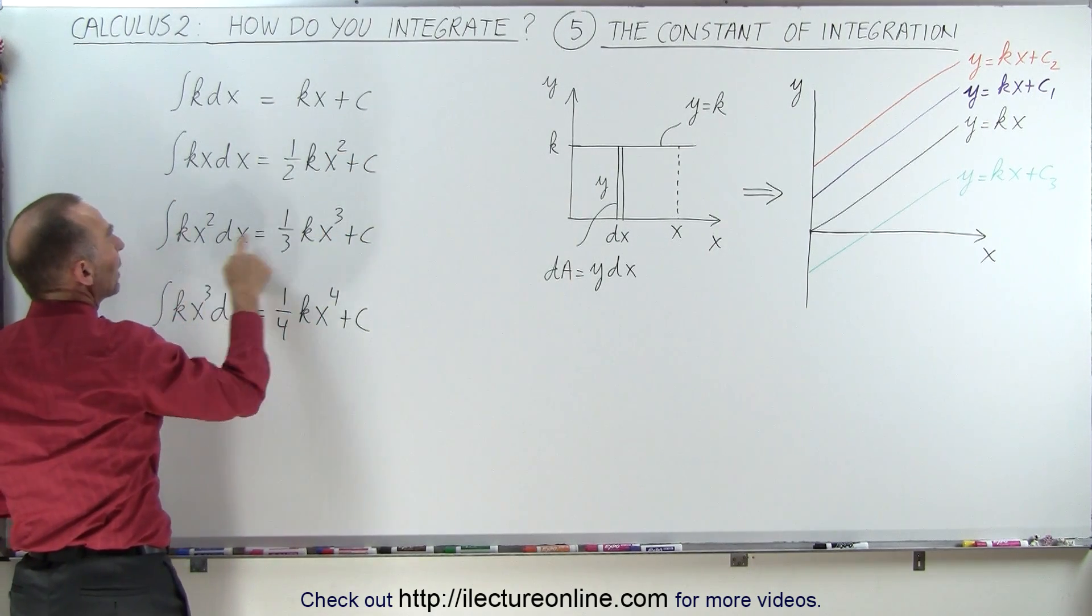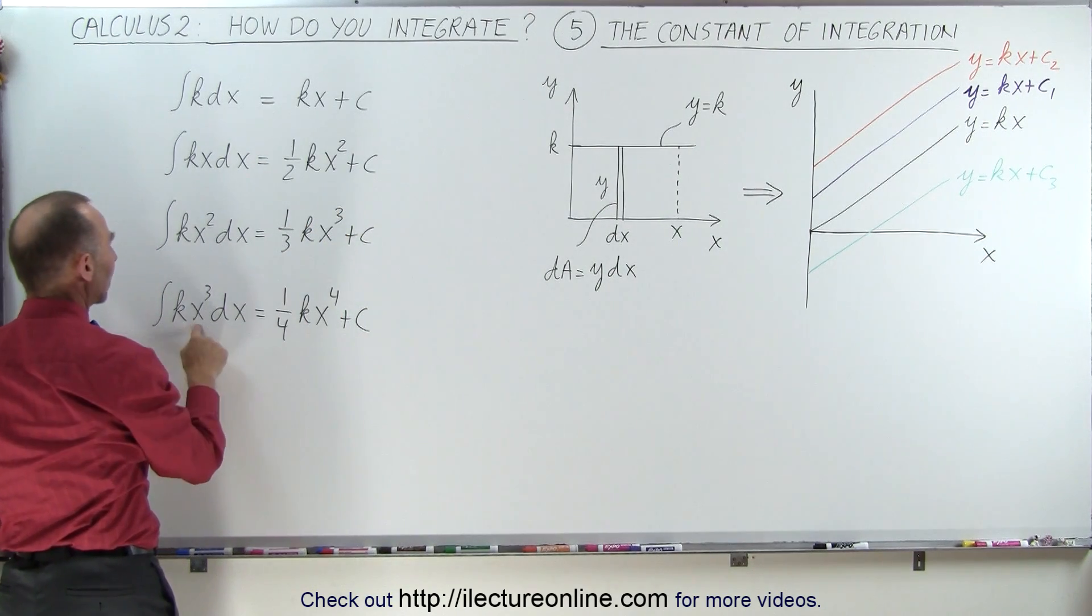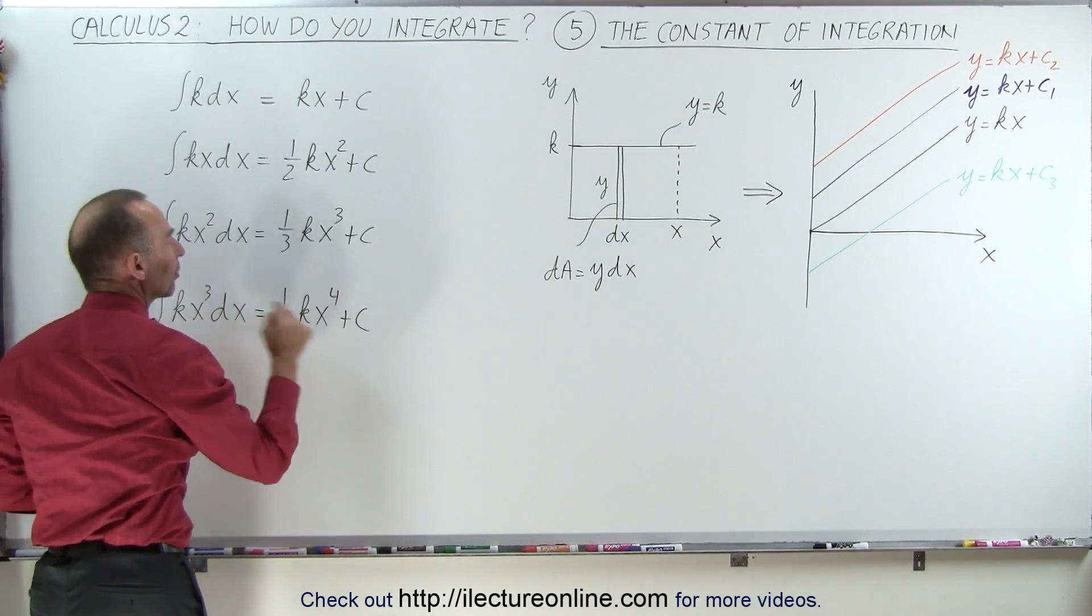kx squared, again, we add one to the exponent, divide by the new exponent, plus a constant of integration. And kx cubed, we add one to the exponent, divide by the new exponent, plus a constant of integration.